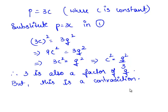The obtained contradiction is due to our wrong assumption that root 3 is a rational number. Therefore, root 3 is an irrational number.